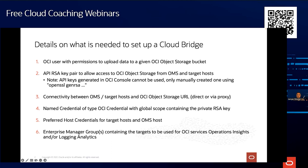We need connectivity between the OMS target host and the object storage URL. There's just a single URL — we use HTTPS on default port 443. You can have a direct connection or go through a proxy. Enterprise Manager needs to access this, so first we will create a credential containing the API key.